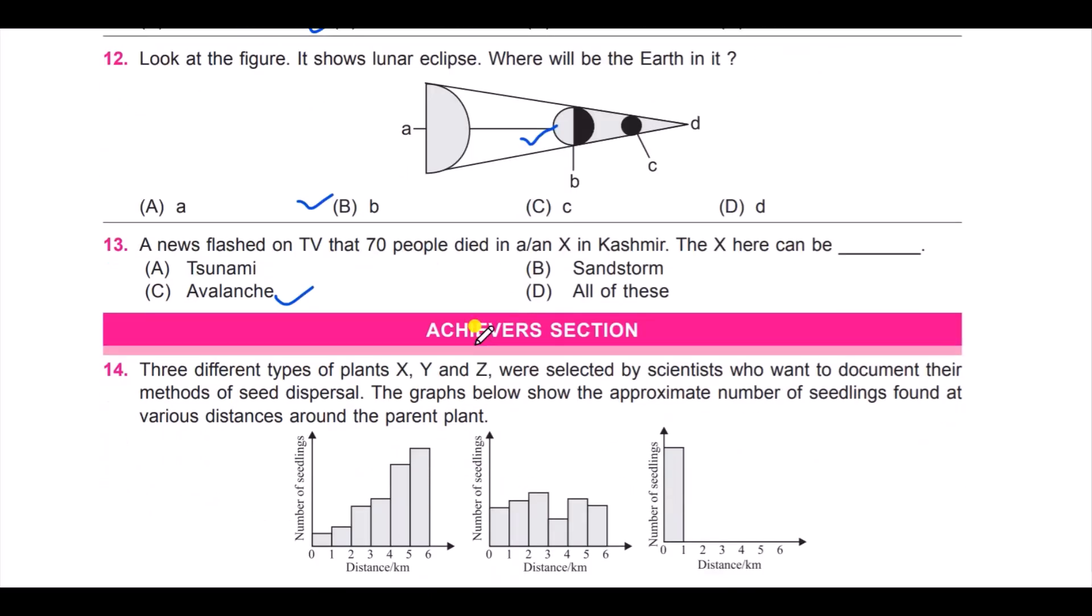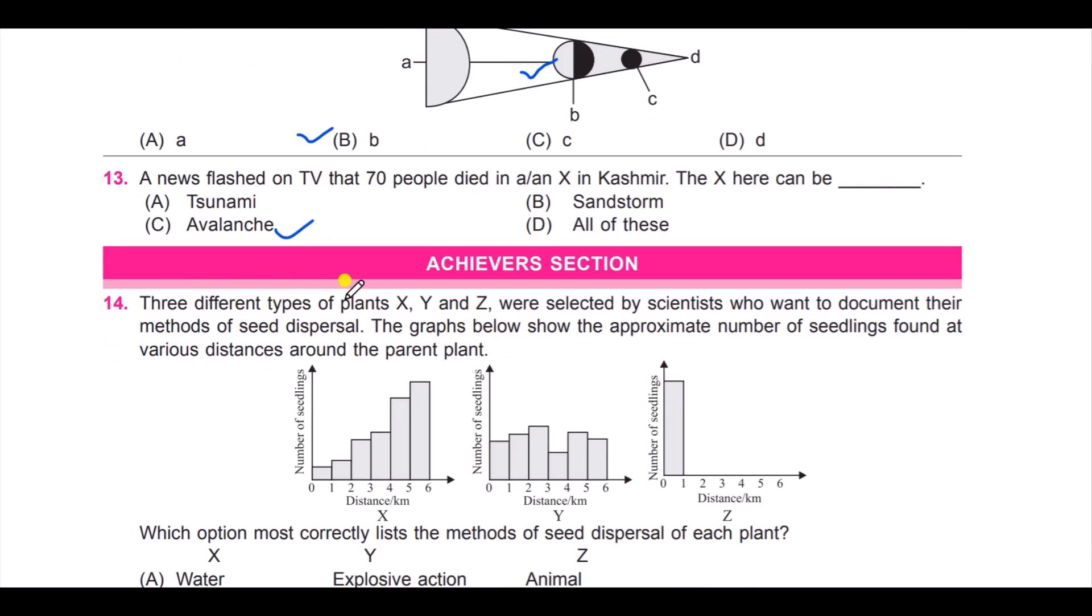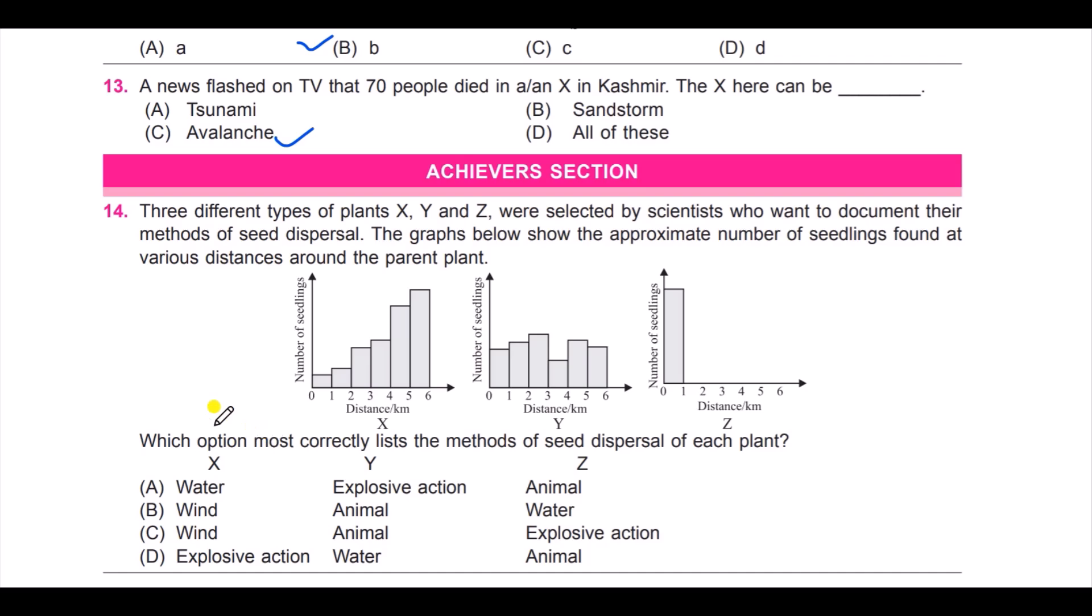Question number 14: three different types of plants—X, Y, and Z—were selected by scientists who want to document their methods of seed dispersal. The graphs below show the approximate number of seedlings found at various distances around a parent plant.